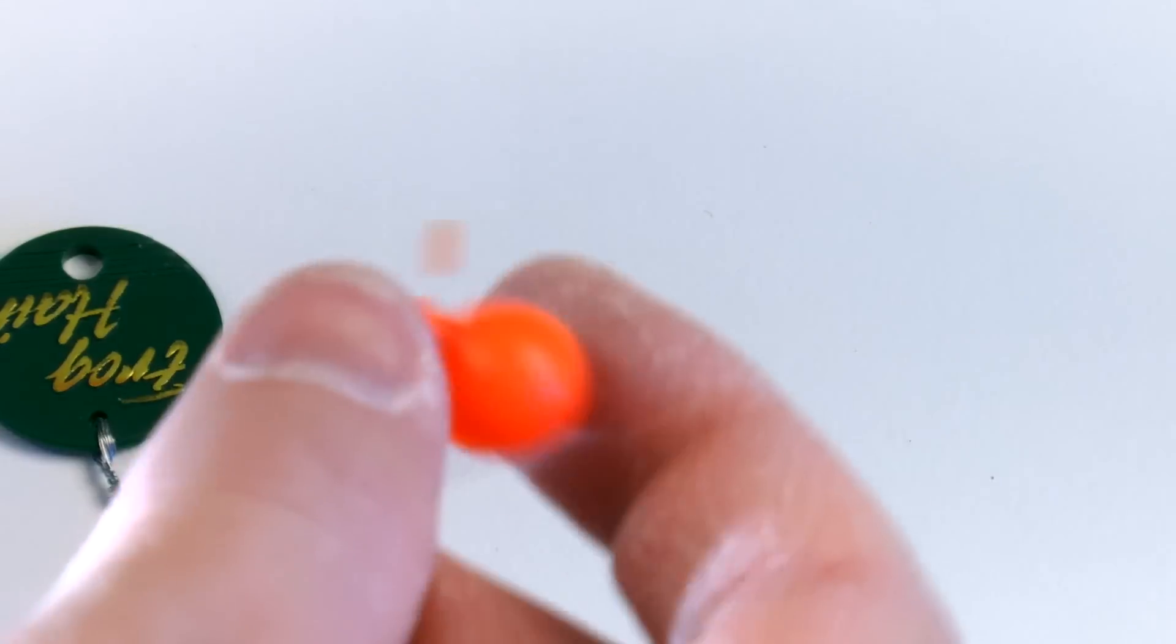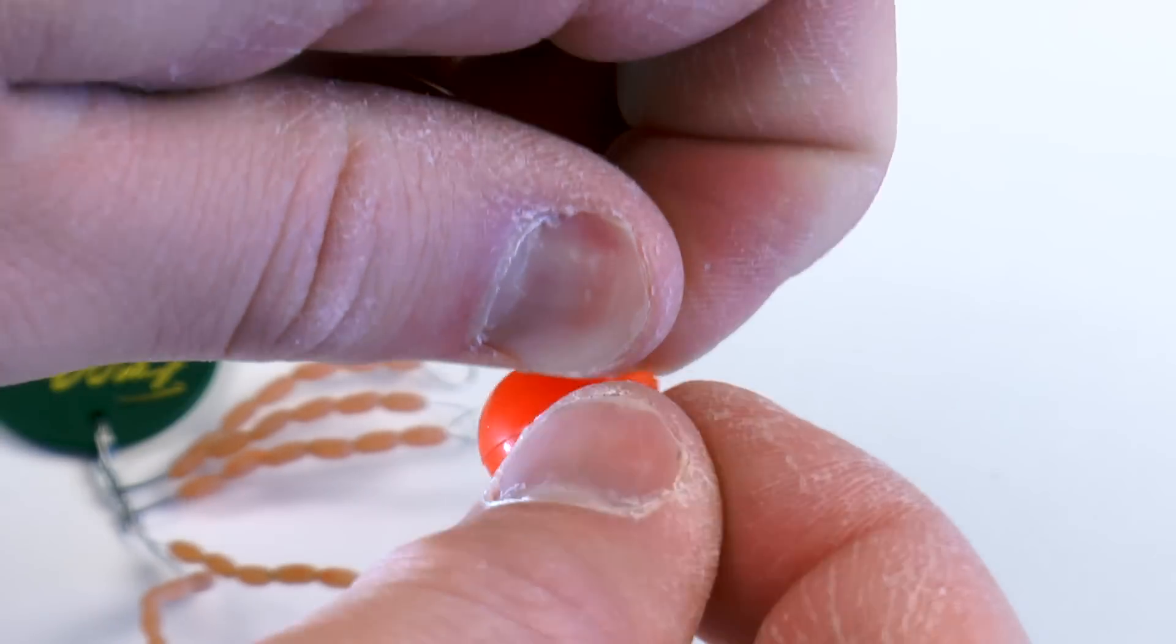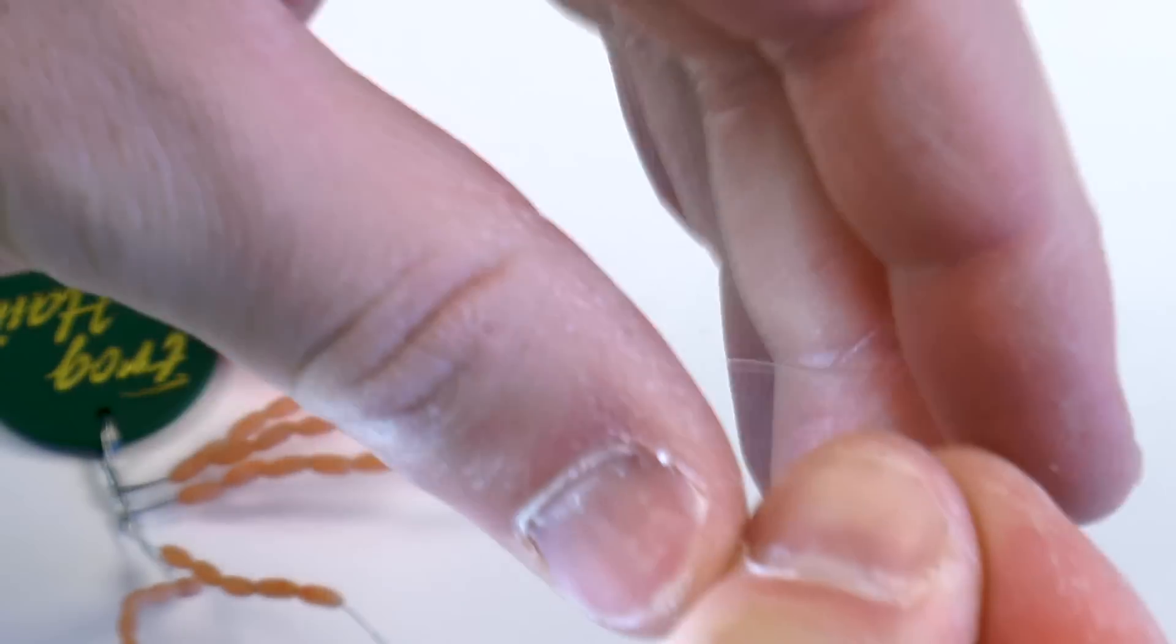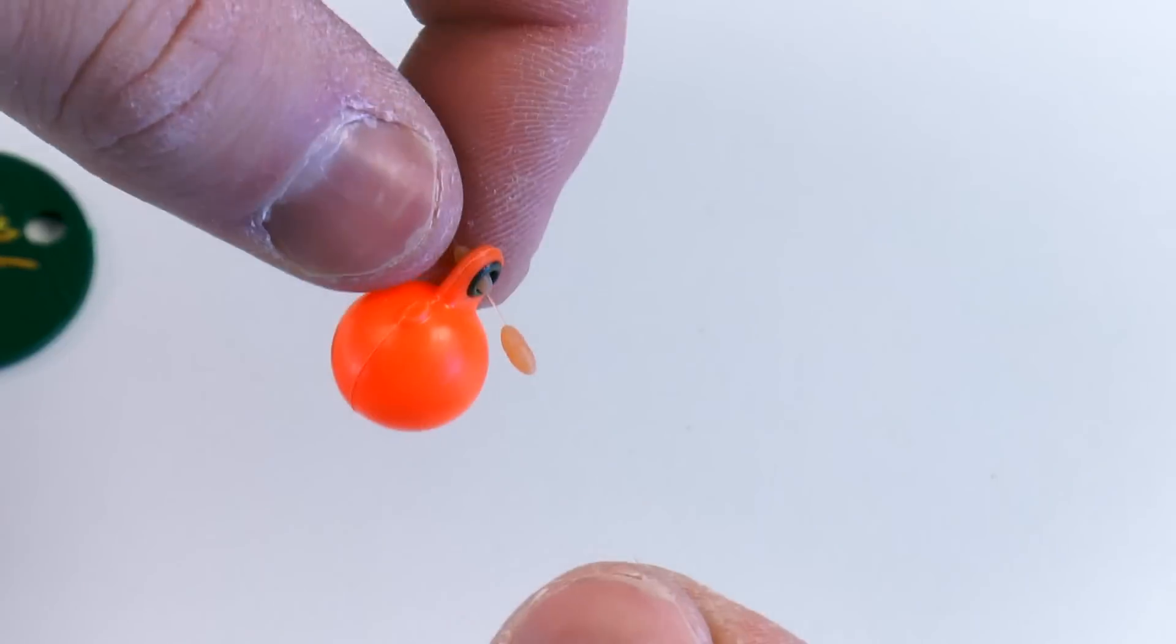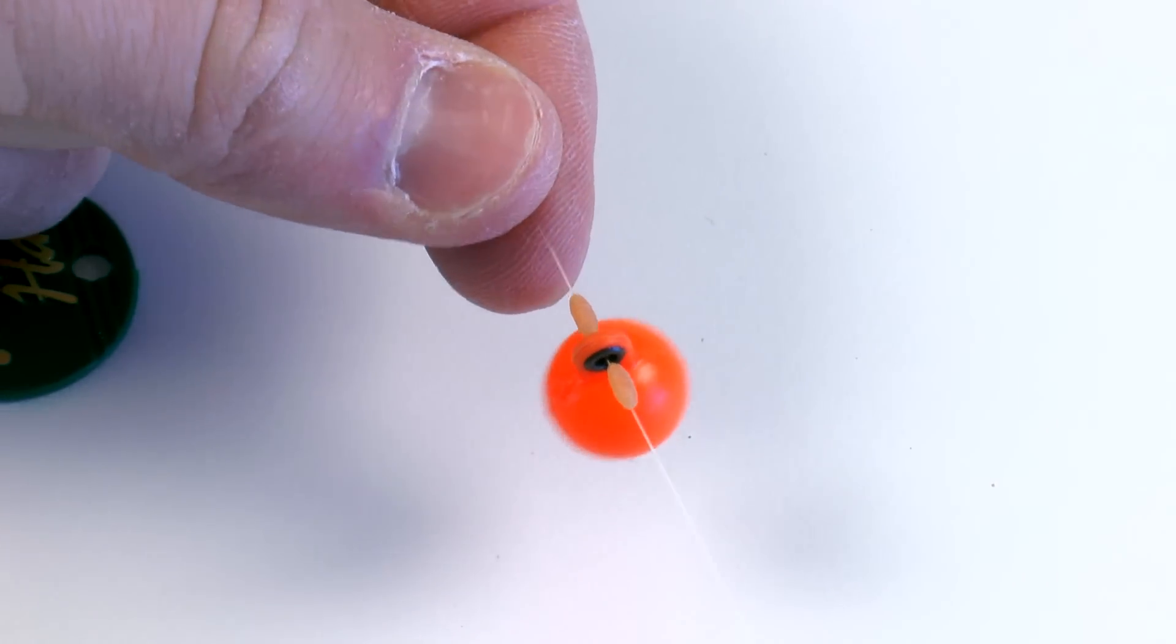And then to move the thingamabobber, that's very easy to do. You just simply slide the grommet up or down, move your thingamabobber, and just slide the two grommets together. So it's that easy to move and use.